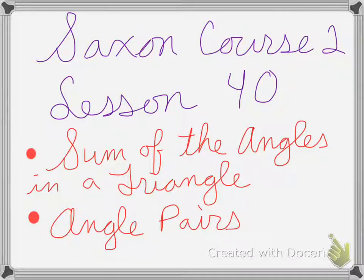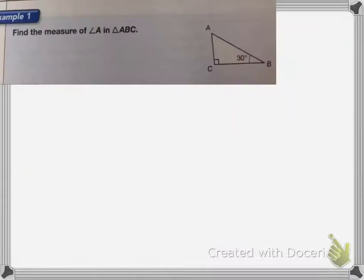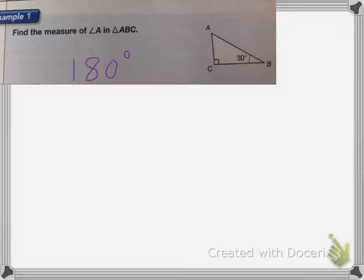Saxon Course 2, Lesson 40 is on the sum of the angles in a triangle and angle pairs. Here it wants me to find the measure of angle A in triangle ABC. We know that all of the angles added together equals 180 degrees.